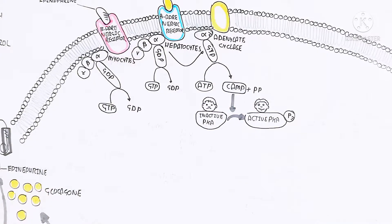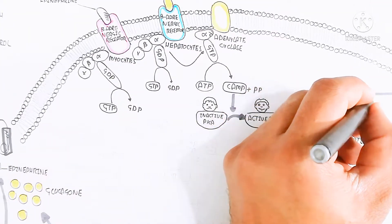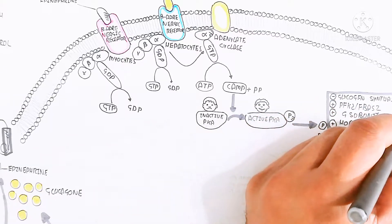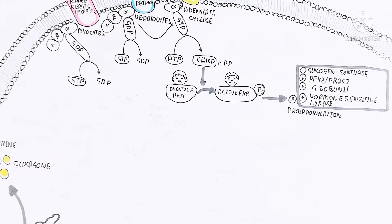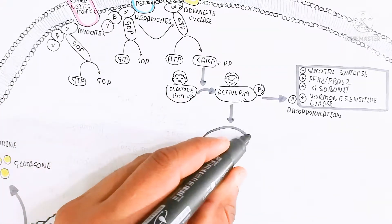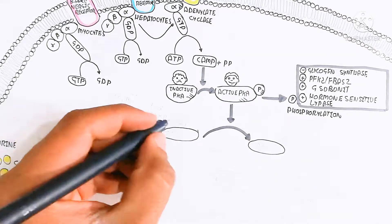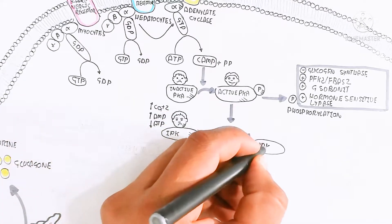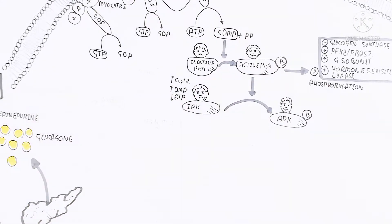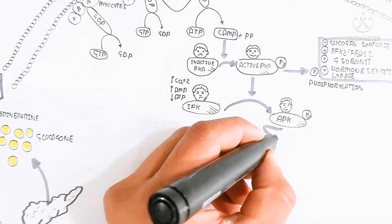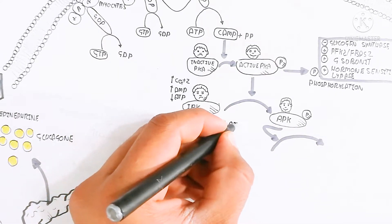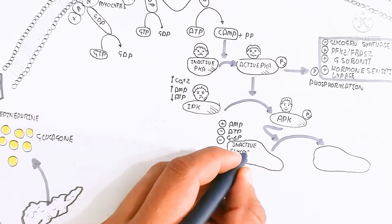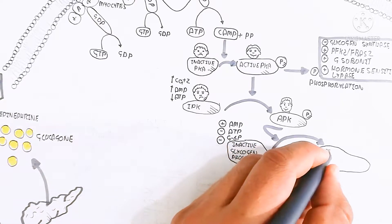In this way, inactive protein kinase A (PKA) is converted to the active form. Active PKA leads to phosphorylation inhibiting glycogen synthase enzyme; PFK2 and FBPase2 are also triggered. The glycogen subunit is increased and hormone-sensitive lipase is increased. Active PKA also converts inactive phosphorylase kinase to active phosphorylase kinase, leading to increased AMP, decreased ATP, and decreased glucose-6-phosphate.